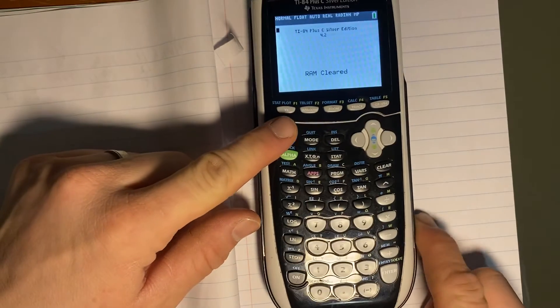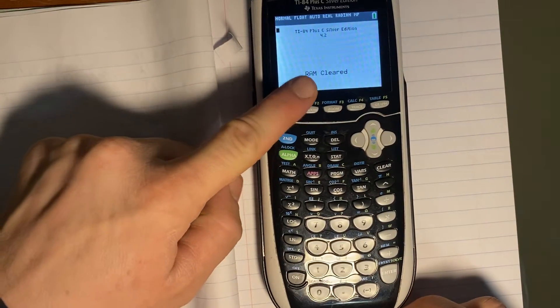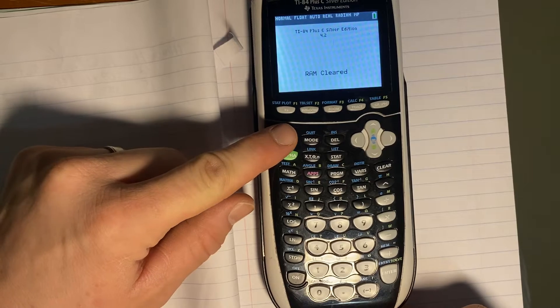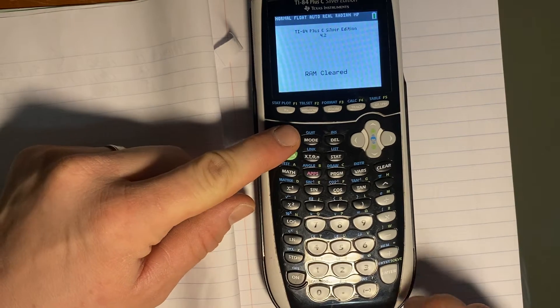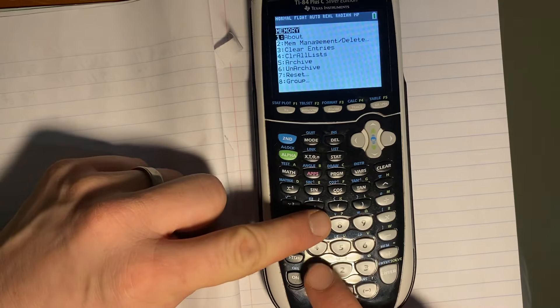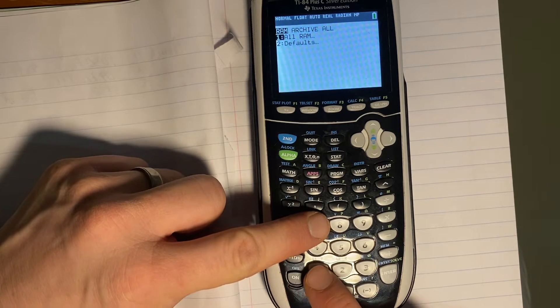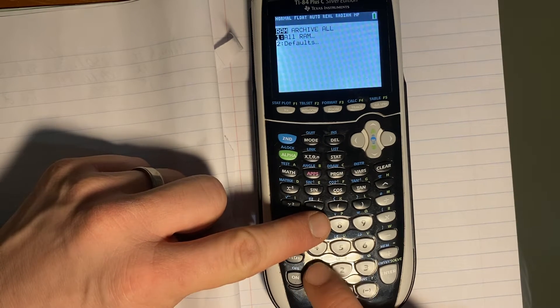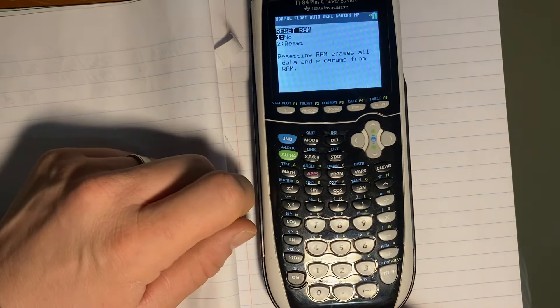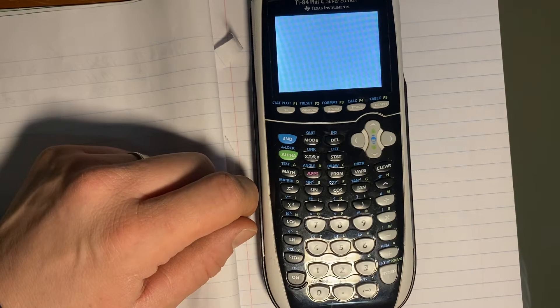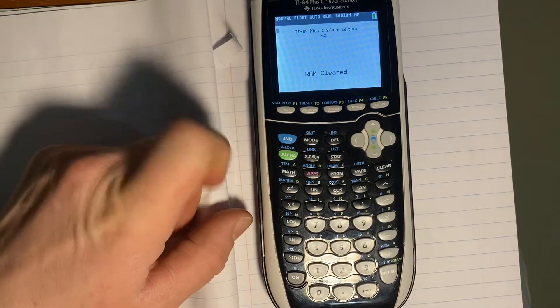So first things first, when you get your calculator on a test, it will be at this RAM cleared menu. If you want to see what that looks like, simply press 2nd function, plus for memory, and then 7 to clear, 1 for all RAM, and 2 to reset. And so this resets your calculator to the exact same mode you're going to get it when you get a test.